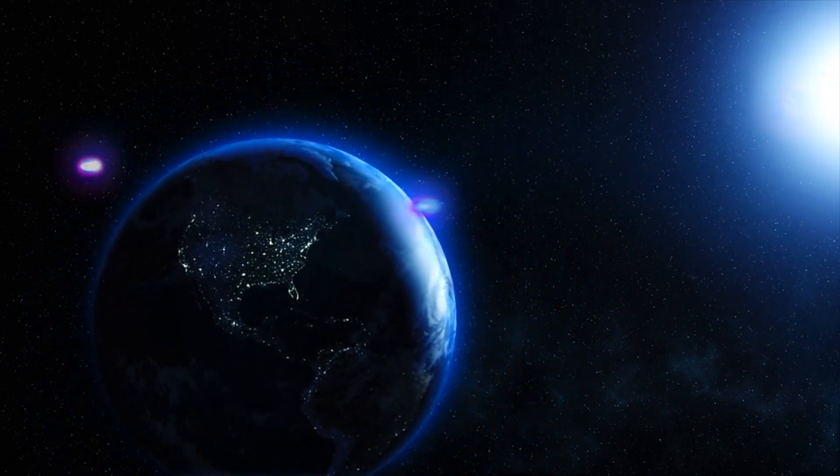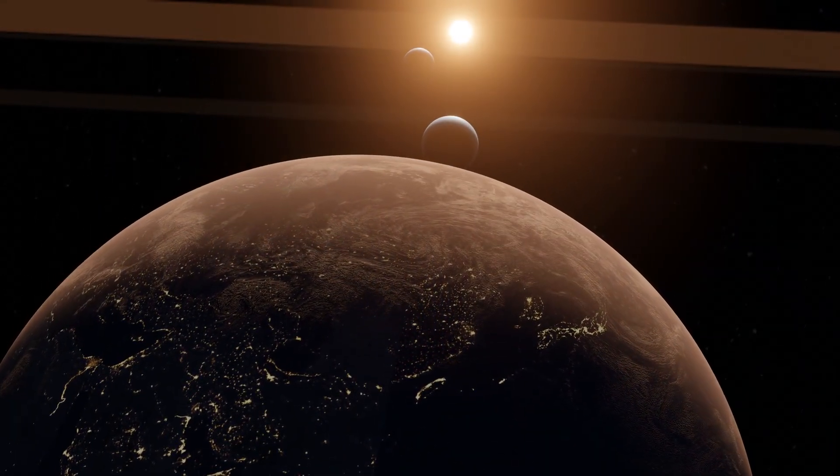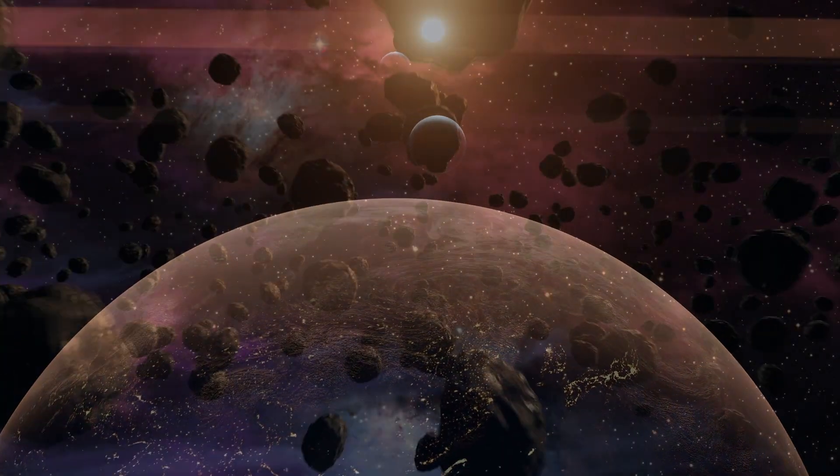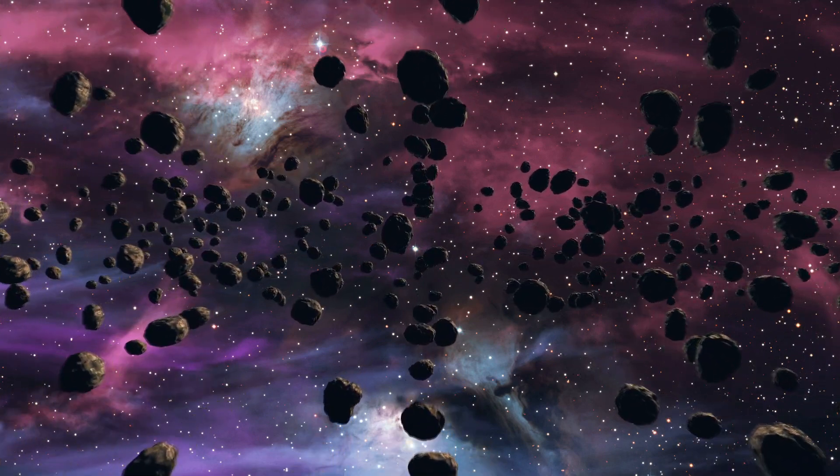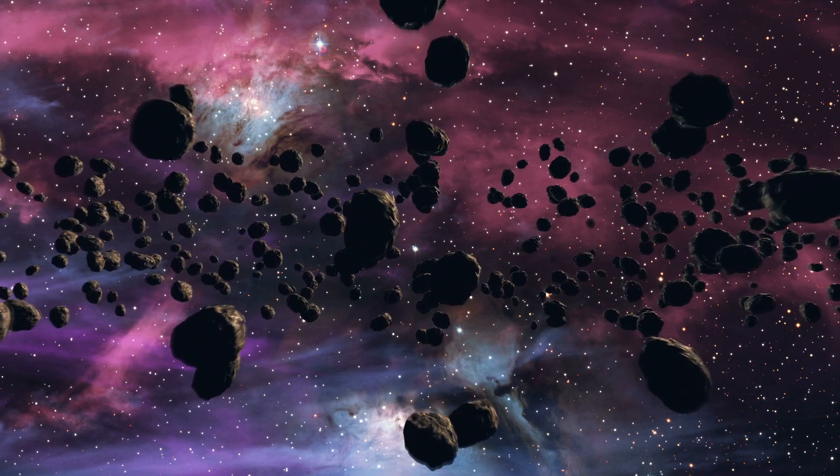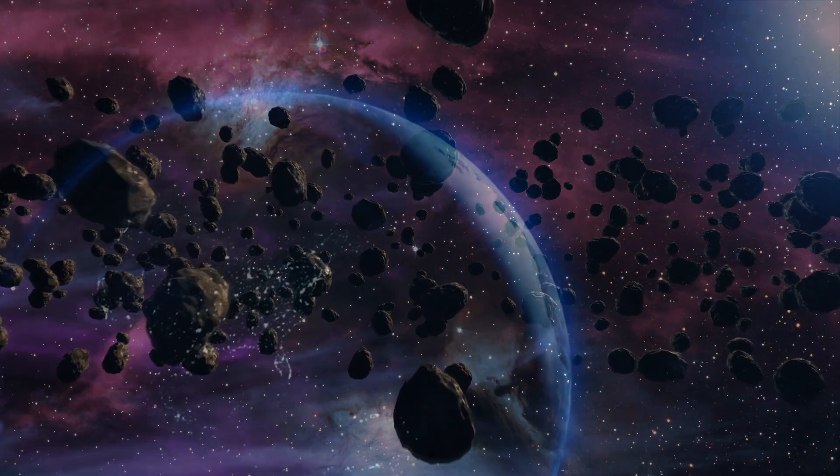Number three: Titan. Titan is Saturn's largest moon and another unique world in the solar system. It has the most powerful rocky atmosphere in the solar system except for Earth and Venus. It is filled with different liquids—lakes, rivers, and oceans—but they are not made of water but of methane and other hydrocarbons. Titan is extremely rich in organic matter.